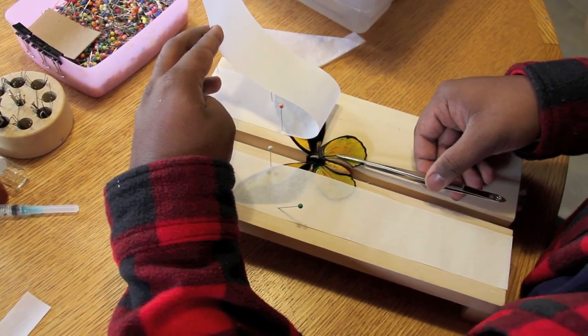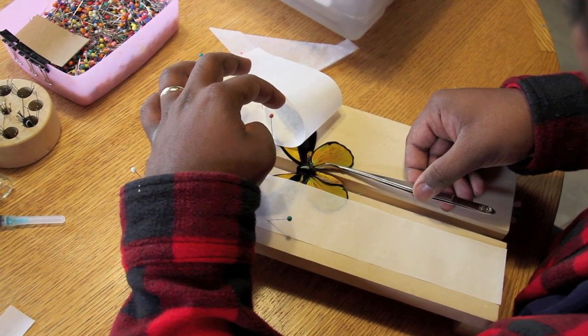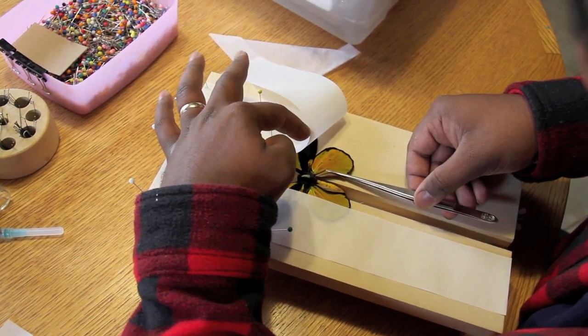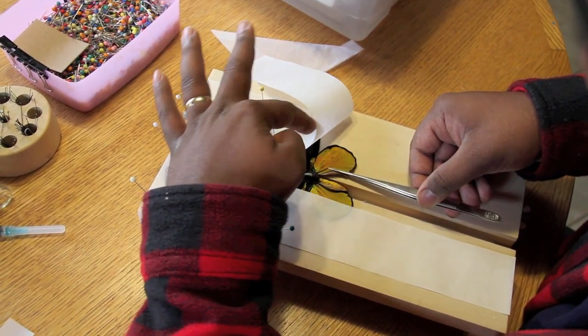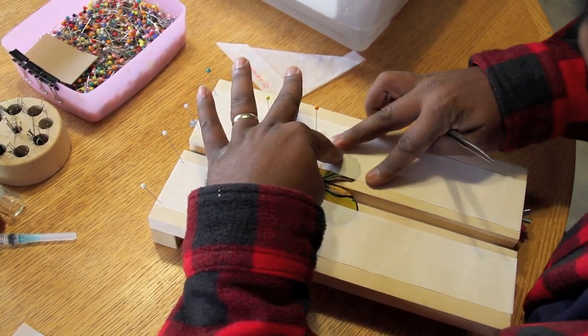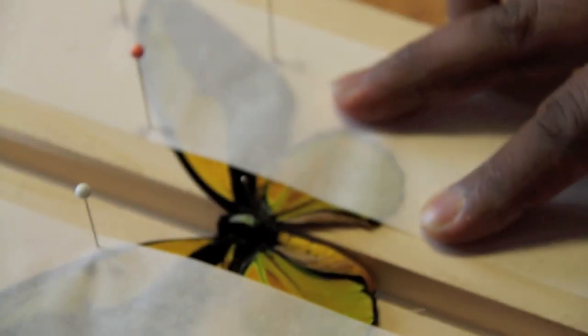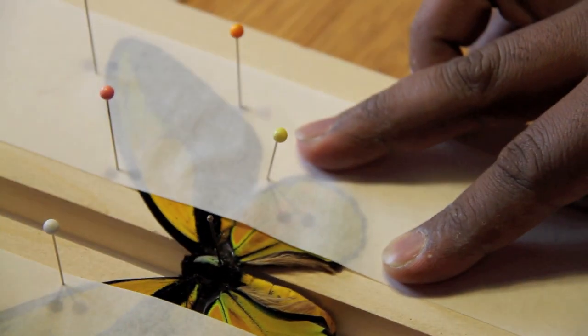I use very little force. I don't want to penetrate the wing or damage the specimen in any way. And then I push the wing up to the point where I think it's going to look good. And then I gently release it, moving the paper back. I apply the force onto the paper while not touching the wings. And then I secure the hind wing using these colored pin heads.